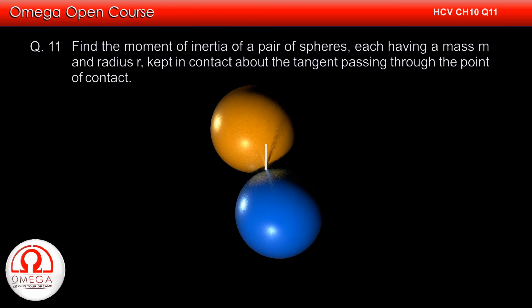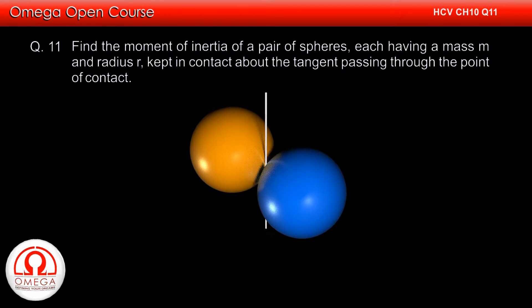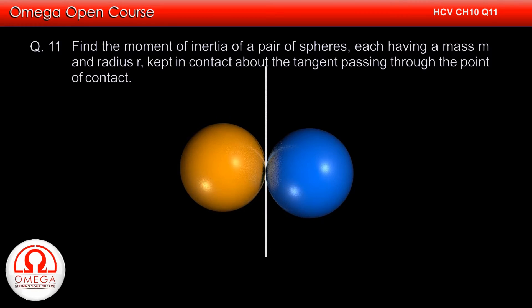Find the moment of inertia of a pair of spheres, each having mass m and radius r, kept in contact about the tangent passing through the point of contact.